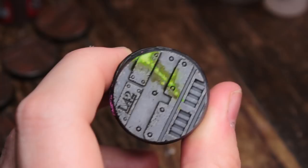Now I'm going to take some Athonian Camoshade and I'm just washing this over the areas. This makes it look a bit like a dirty smear.